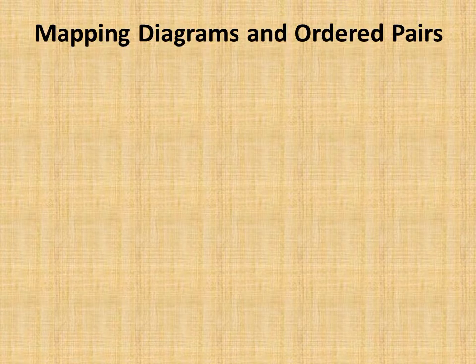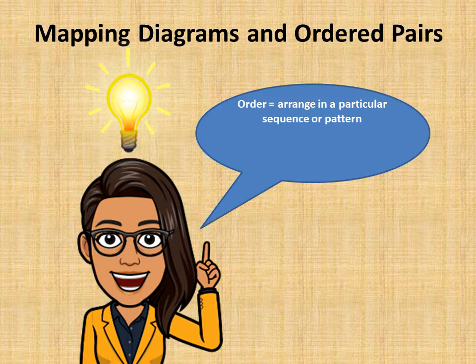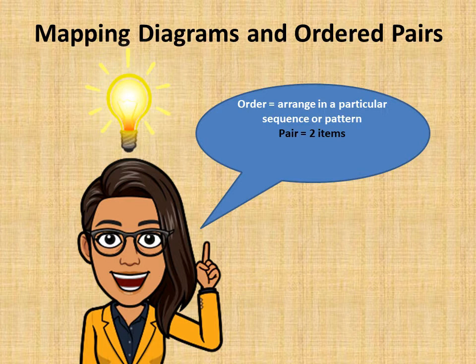You must be wondering what is Miss Hamilton talking about when she talks about ordered pairs. Let's do a quick breakdown of the term. To order, in terms of math and numbers, means to arrange things in a particular sequence or pattern — like ascending order or descending order. Pair means two items. So if we put these two words together we get ordered pairs — what do you think ordered pair means?